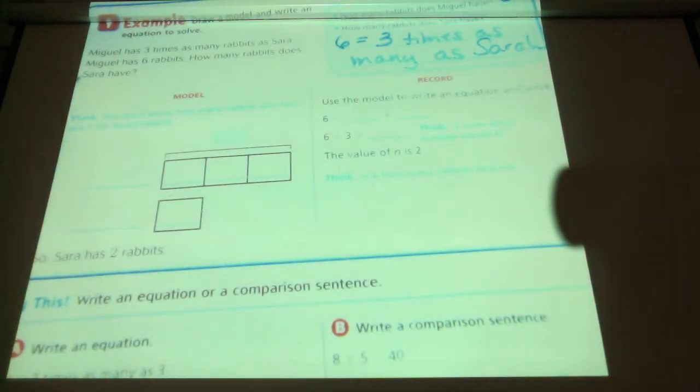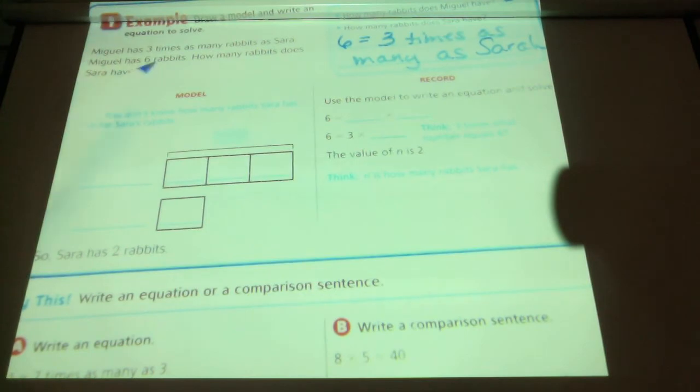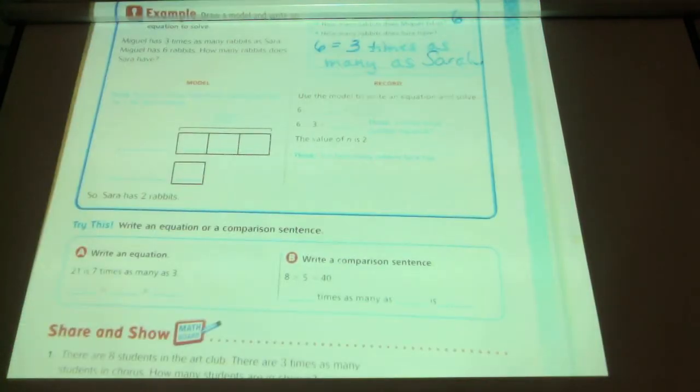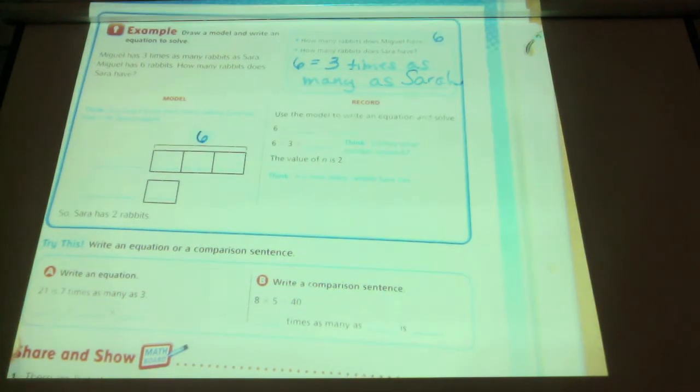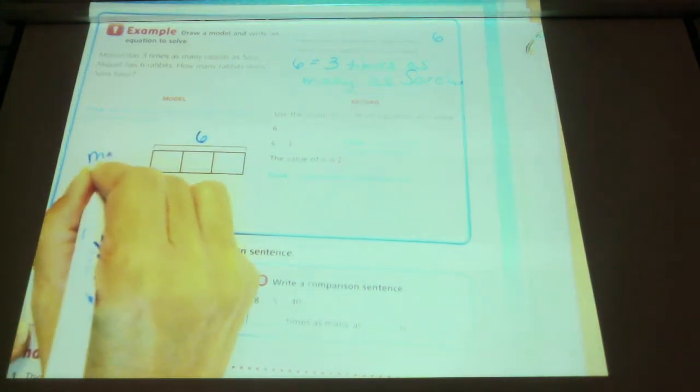So we already know Miguel has 6 rabbits. We know that those 6 are 3 times as many as Sarah. Did you decide that Sarah is going to have less or more than Miguel? Less. We decided less. Miguel has a total of 6. 6.